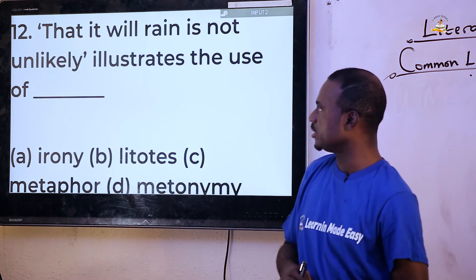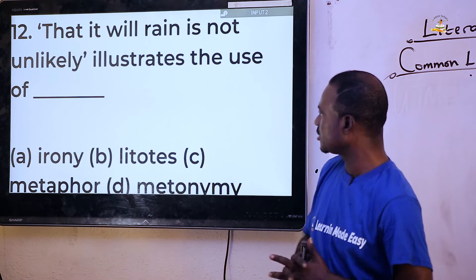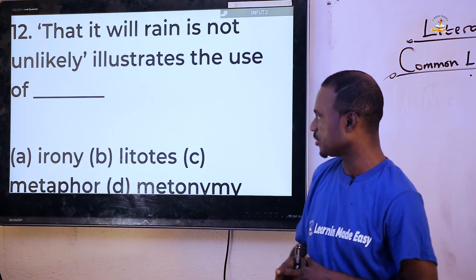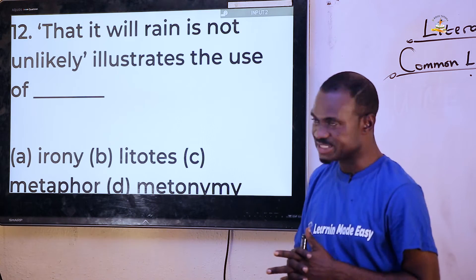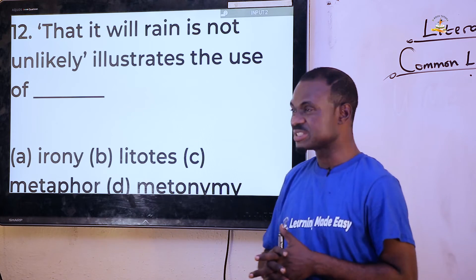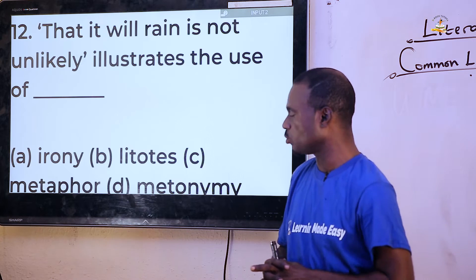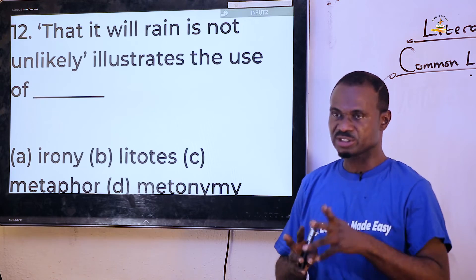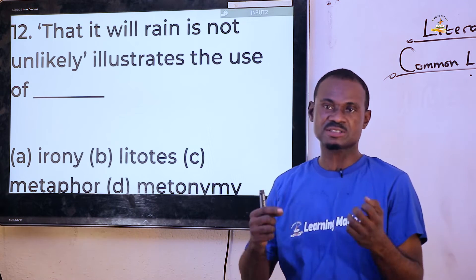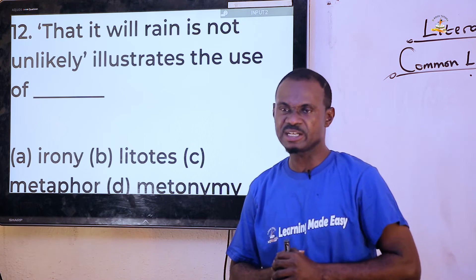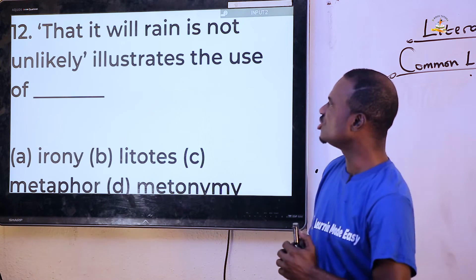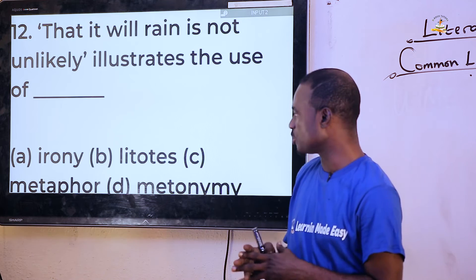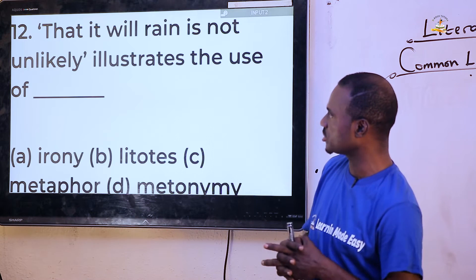Question twelve: 'That it will rain is not unlikely' illustrates the use of dash. Irony would be wrong, metaphor would be wrong, metonymy would also be wrong. The correct answer is litotes. Litotes is when you express a positive by using the negative — using 'no' or 'not.' 'That it will rain is not unlikely' means it will definitely rain. That is litotes.